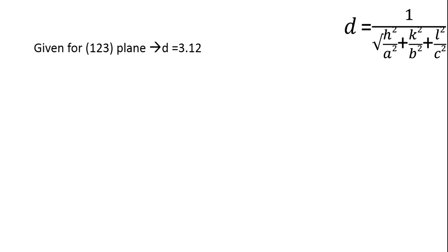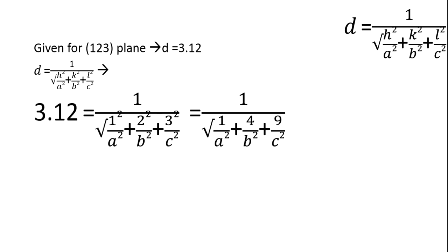And it is given for (123) plane, d equals 3.12. That is d_hkl. Substituting the value of hkl in (123), we'll be getting 3.12 equals 1 by root of 1 by a square plus 4 by b square plus 9 by c square.